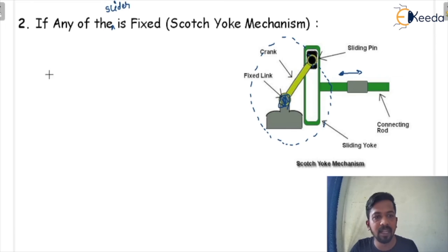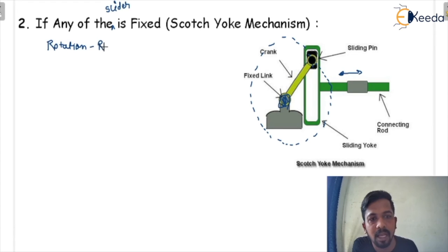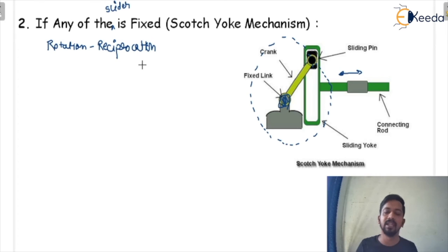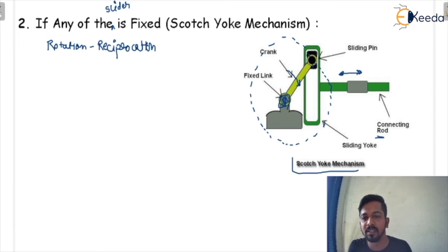Basically, there is a rotation of the connecting rod and a reciprocation of the slotted plate — that is a rotation-reciprocation mechanism. When you give input to the crank, you will get reciprocation of motion. That is the scotch yoke mechanism. In the diagram, the first slider is fixed — denoted by the dashed area. As this link makes a complete rotation, the plate will be in reciprocation.